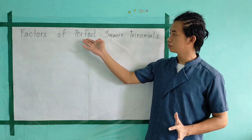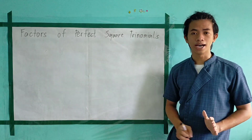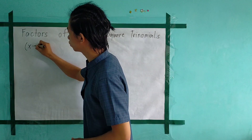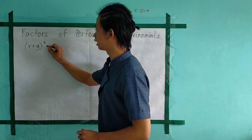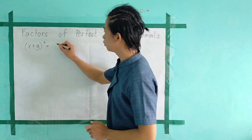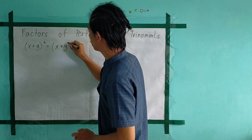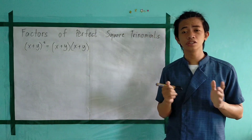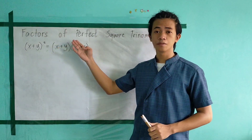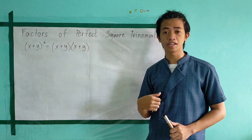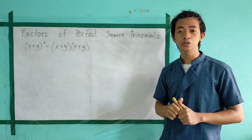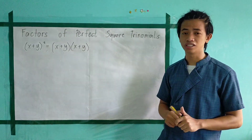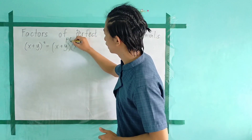But before we proceed to this lesson, let me ask you first: what is the product of these two binomials? Let's say we have (x + y) squared. Or let's write this in expanded form, we have (x + y) multiplied by (x + y). So during your grade 7, you have learned how to get the product of these two binomials using the FOIL method and using square of a binomial in your special products. So this time, let's use the FOIL method.